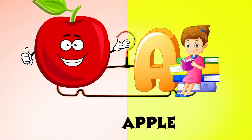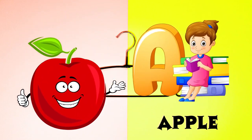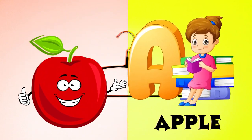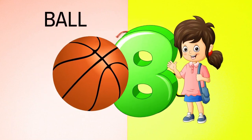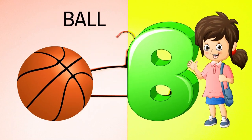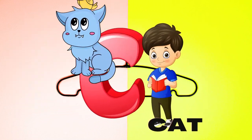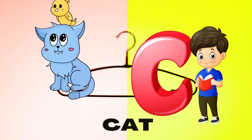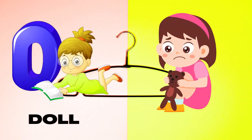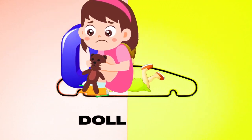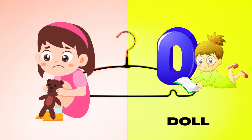A is for Apple, A-A-Apple. B is for Ball, B-B-Ball. C is for Cat, C-C-Cat. D is for Doll, D-D-Doll.